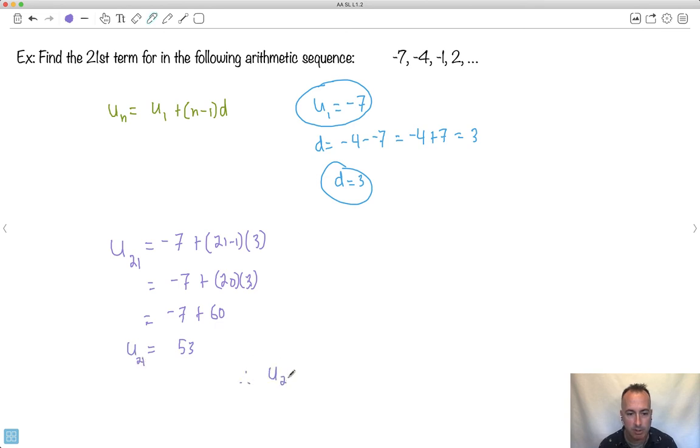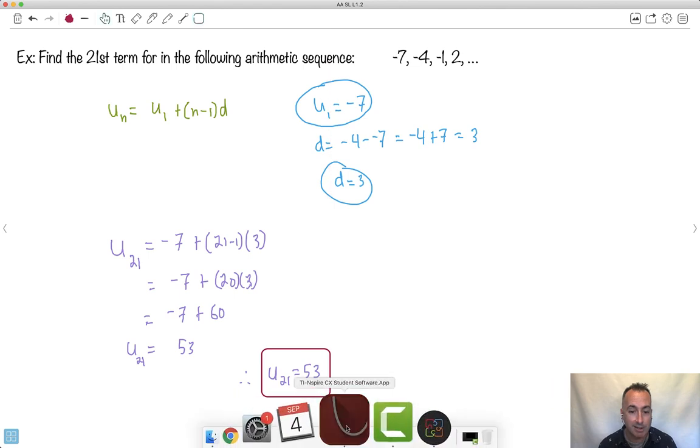And 60 minus 7 is 53. So I can conclude, therefore, U21 equals 53. There we go. I'm done. So this just shows you how you can find the 21st term. You can find any term, in fact.